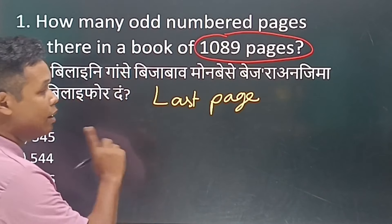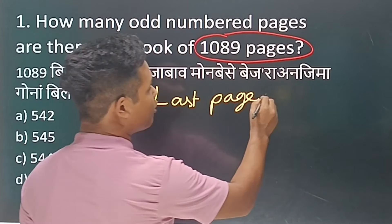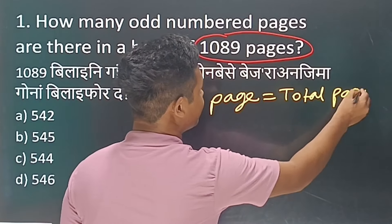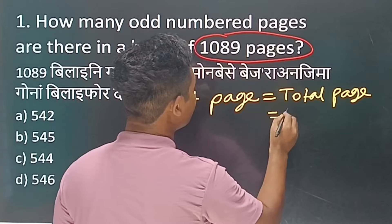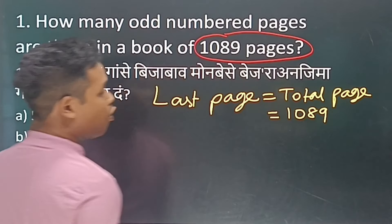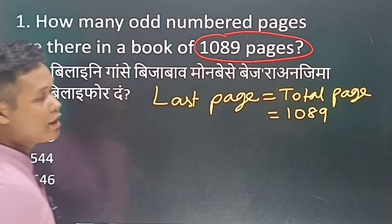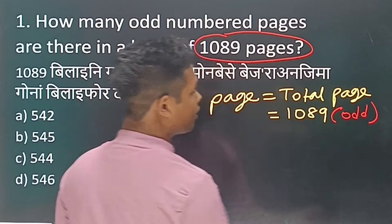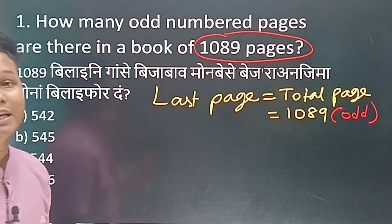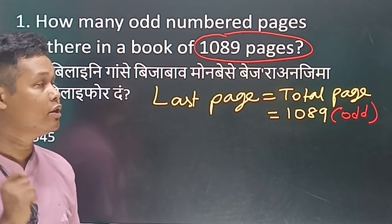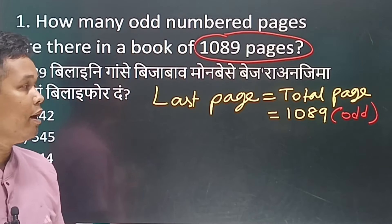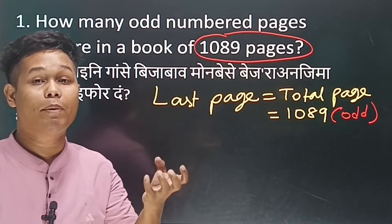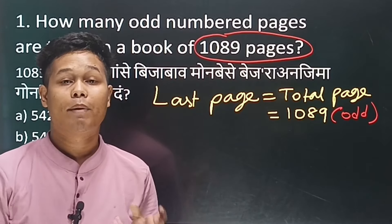The last penny is to give you the total penny. This is $109,000. The last penny gives you the total penny.